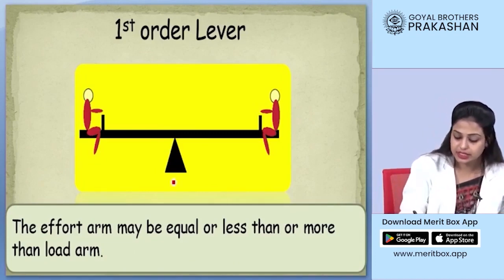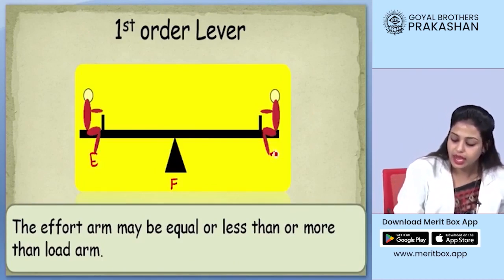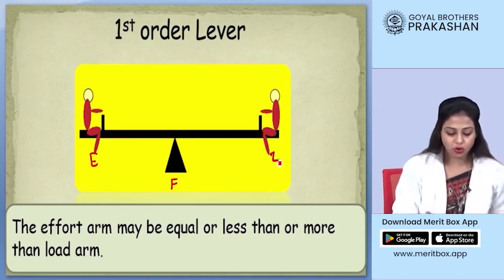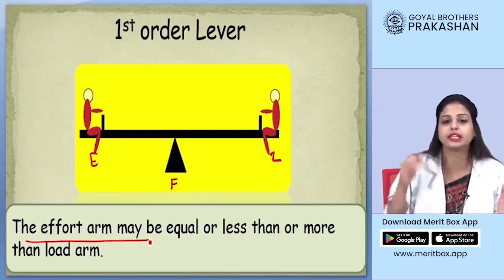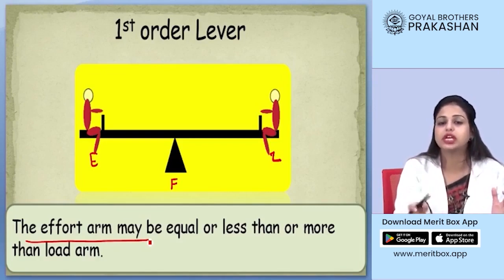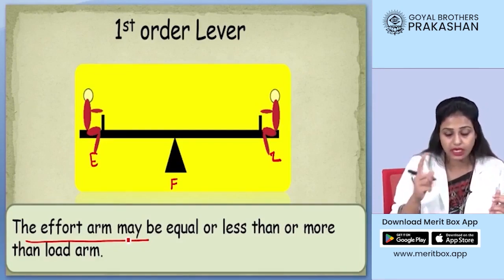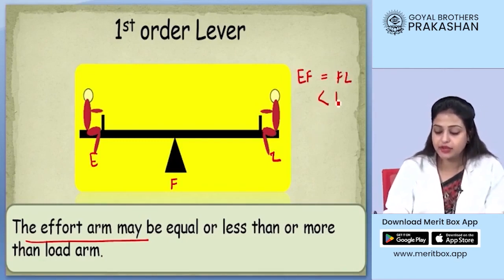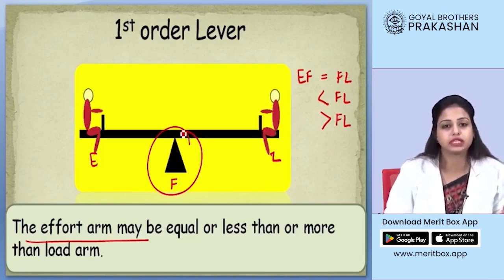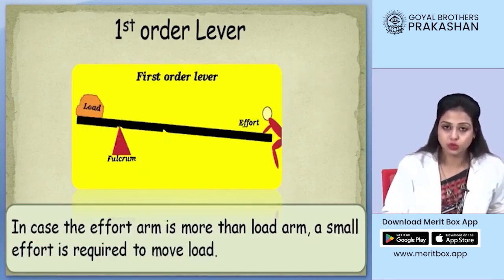Let's say I define my fulcrum by the letter F, my effort is given by E, and my load is defined as L. The effort arm is the distance between the effort and the fulcrum. Similarly, the load arm is the distance between the load and the fulcrum. So EF can be equal to FL, it can be less than FL, or it can even be more than FL, depending on the position where we place our fulcrum in between the effort and the load. Let's discuss these cases.